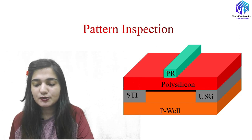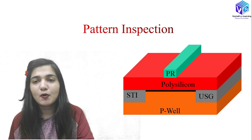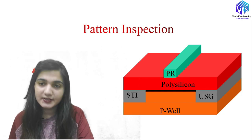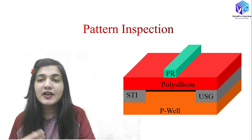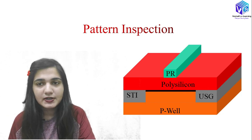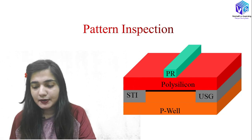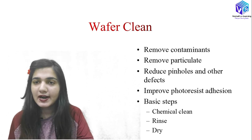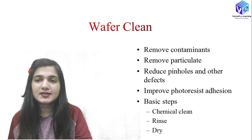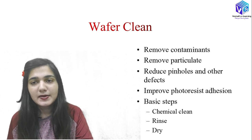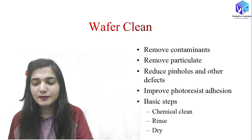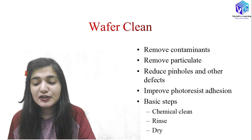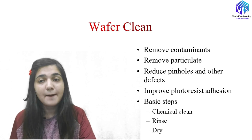If there is more and more particulate matter, the photoresist may not properly adhere to the surface of the polysilicon or silicon dioxide layer. So the wafer must be very clean. The basic steps in the cleaning process: first we do chemical cleaning — dip the wafer in a chemical, then rinse it. For more detail on cleaning, see the previous videos where I discussed RCA cleaning and pre-oxidation cleaning.